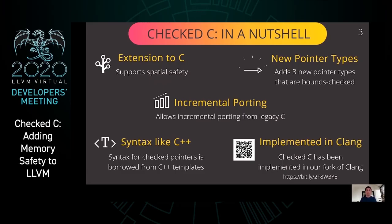What exactly is Check C? Check C is an extension to C designed to support spatial safety. Most importantly, Check C adds three new types of checked pointers that are bounds checked. Every C program is also a Check C program, so Check C allows for incremental porting, meaning that you can convert as much or as little of your legacy C code to Check C as you want. The syntax of Check C has been borrowed from C++ templates for convenience, and we have implemented Check C in our fork of Clang.